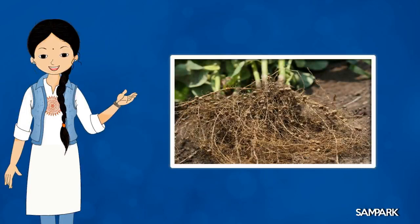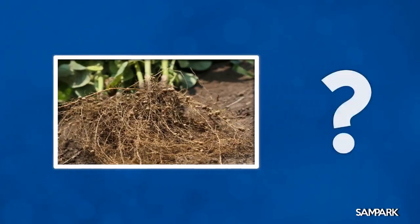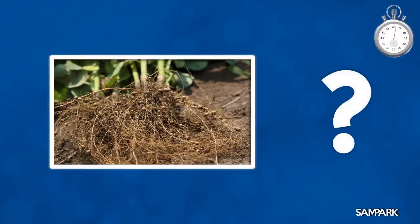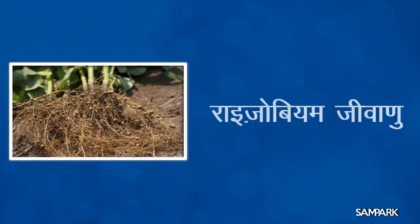बच्चों, चना, मटर, मूँग आदि फलीदार पौधों की जड़ों में रहने वाले जीवाणु जो कि नाइट्रोजन की आपूर्ति करते हैं, उन्हें क्या कहते हैं? उन्हें राइज़ोबियम जीवाणु कहते हैं।